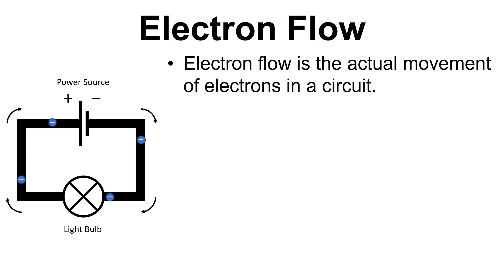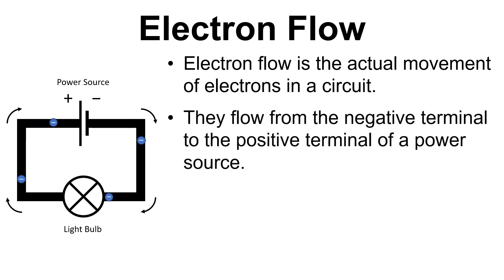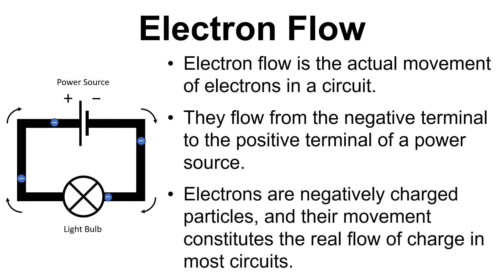In contrast, electron flow is the actual movement of electrons in a circuit. They flow from the negative terminal to the positive terminal of a power source. Electrons are negatively charged particles and their movement constitutes the real flow of charge in most circuits.